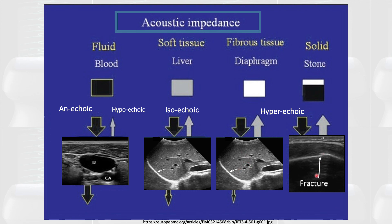The structures with the highest density and most hyperechoic appearance on ultrasound are bone and stones. Here you can see a bone showing a fracture — it appears very hyperechoic, and there's a shadow behind the bone because the structures behind it receive few ultrasound beams since most were already reflected back. This is why bone appears brighter than even the diaphragm. To summarize: structures can be anechoic, hypoechoic, isoechoic, or hyperechoic — these are the key terms when discussing acoustic impedance.